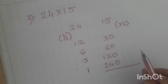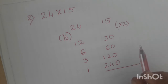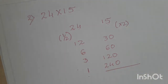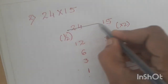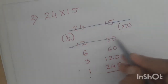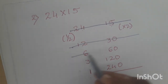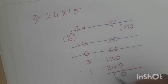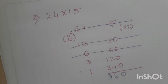Now cross out the rows where you have even numbers in the halves column. Here 24 is even — cross out. 12 is even — cross out. 6 is even — cross out. What is left is 3 and 1, corresponding to 120 and 240. Adding: 0, then 4 plus 2 is 6, and 2 plus 1 is 3. So your answer is 360.